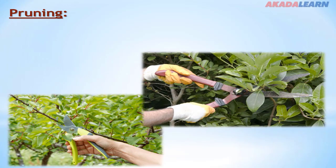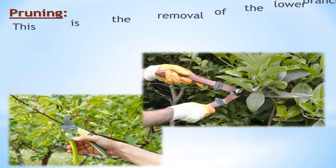Pruning. Pruning is one of the most important aspects of agronomic practices. It is the removal of diseased or dead parts of the plant. This will enable the plant to grow better and properly.